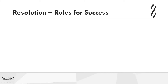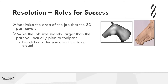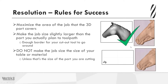The first thing you want to do is maximise the area of the job that the 3D part covers. You don't want to have lots of space in your job that is irrelevant to what you're actually machining. A good idea is to make the job size slightly larger than the parts that you actually plan to toolpath, leaving enough border for your cutout tool to go around. You can see in the image the 3D horse head model and the rectangle surrounding it represents the job size.